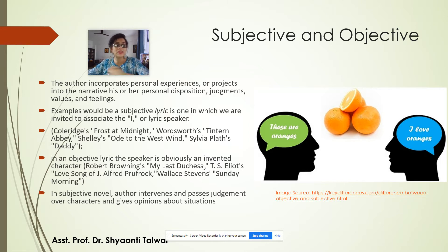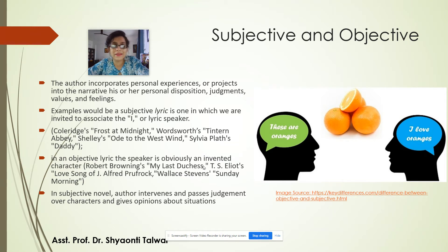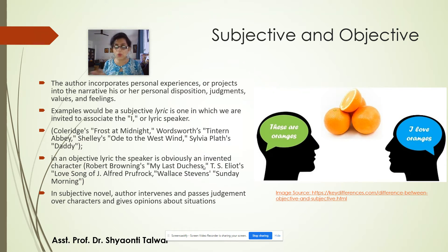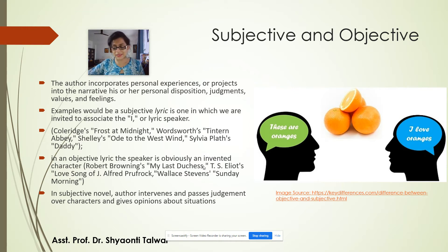Now let's look at what the subjective novel does. In the subjective novel, the author intervenes and passes judgment over characters and gives opinions about situations. A novel which comes to mind is Arundhati Roy's The God of Small Things. You have a very clear picture of the position the author takes. Though she is nowhere in the narrative space and the narration does not even happen in the first person, you can very well identify where the author's sympathies lie. That is a subjective novel.